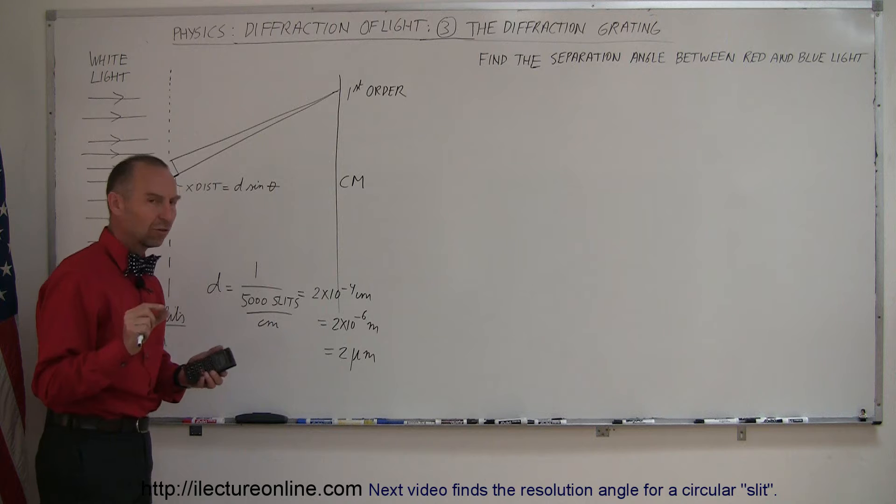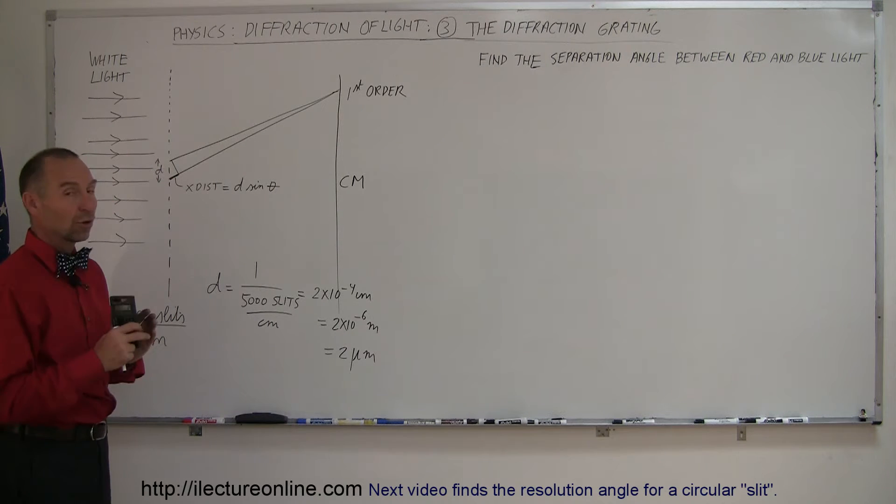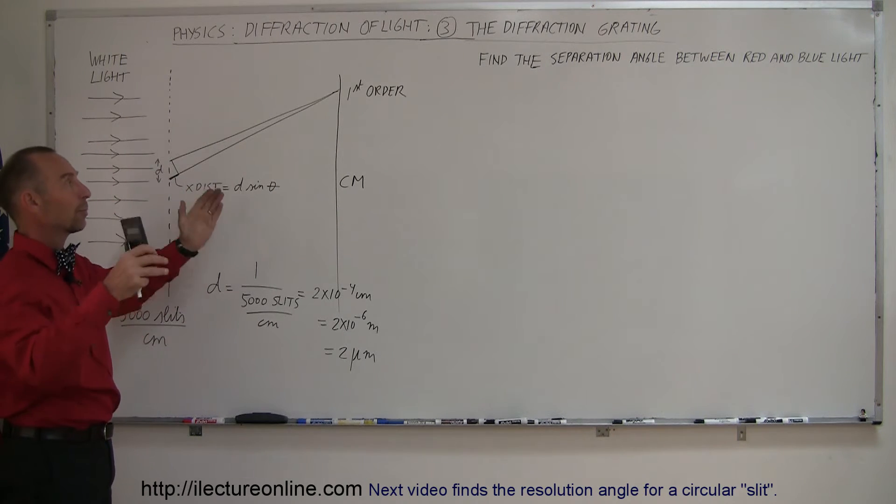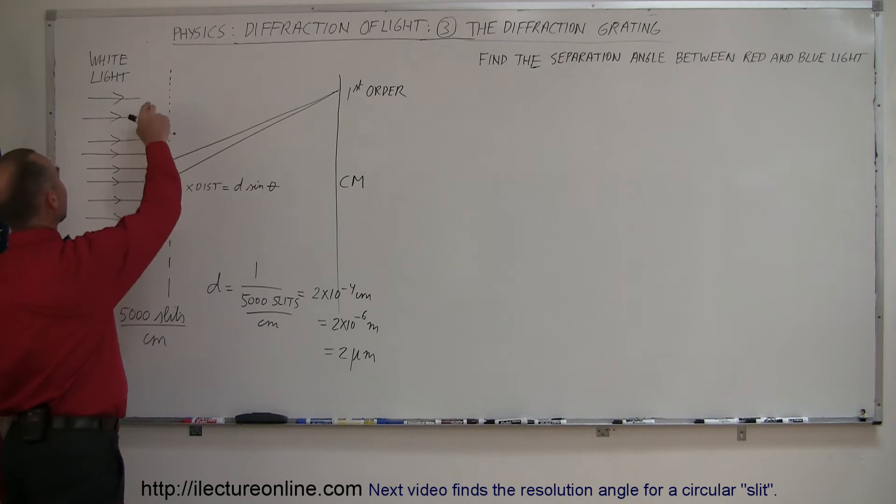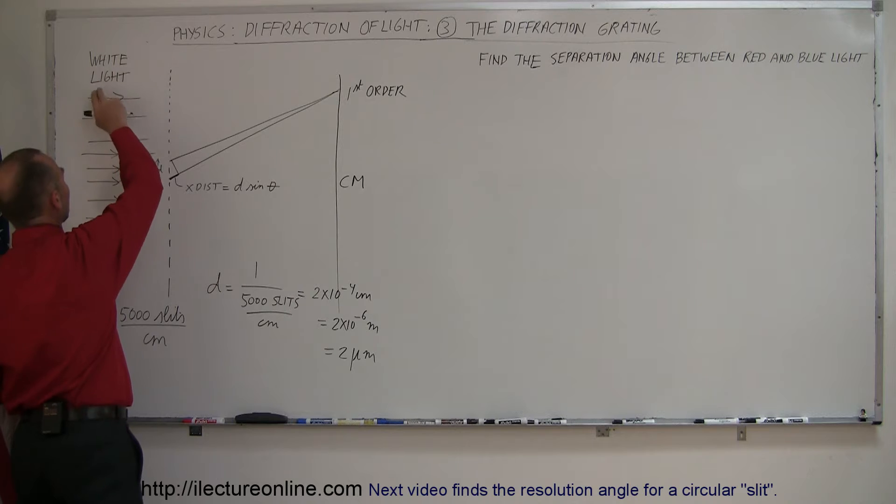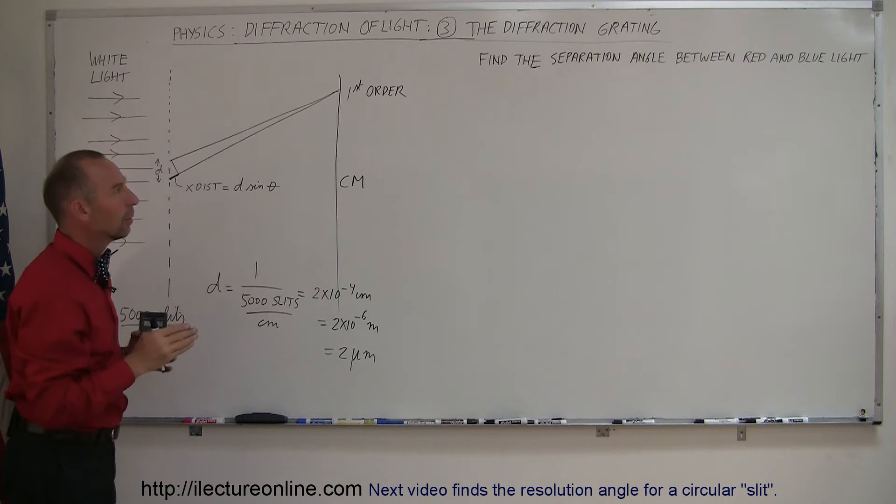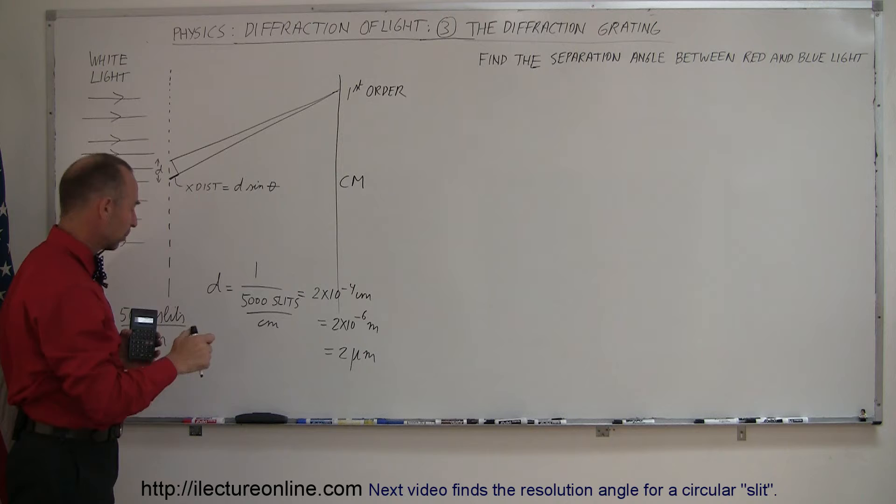So the separation distance between adjacent slits is 2 micrometers, which forms a very widely separated pattern on the other side. And if the light that we shine through the diffraction grating contains all the colors, what would be the separation angle between the red light and the blue light?